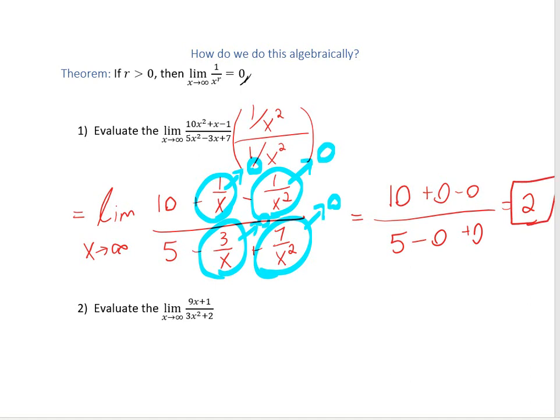Another way to think about this philosophically: as x gets really big toward infinity, the x² terms dominate the function so much that the x, the 1, the 3x, and the 7 become essentially null — they don't really matter. What dominates is 10x² on top and 5x² on the bottom, and the ratio of 10 times infinity squared divided by 5 times infinity squared gives you a ratio of 2.